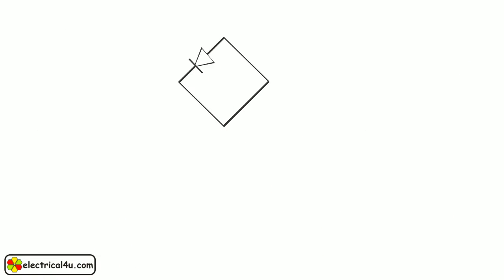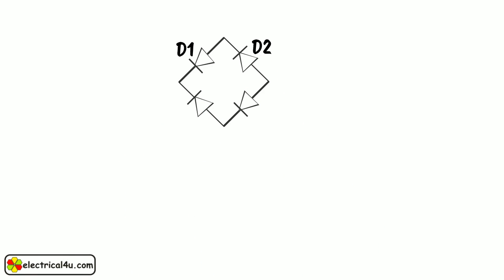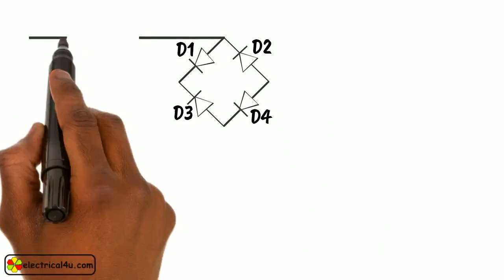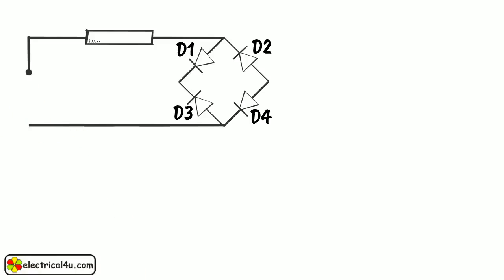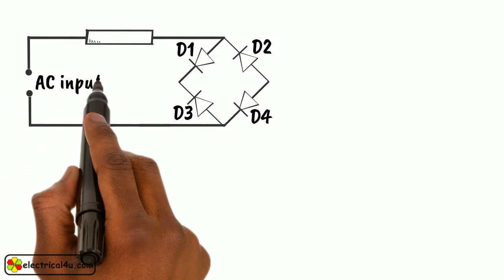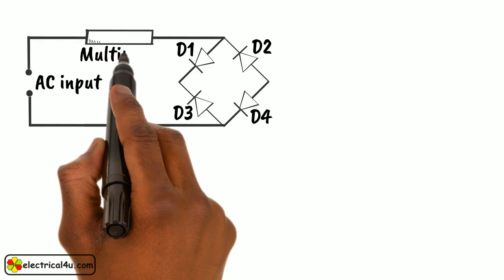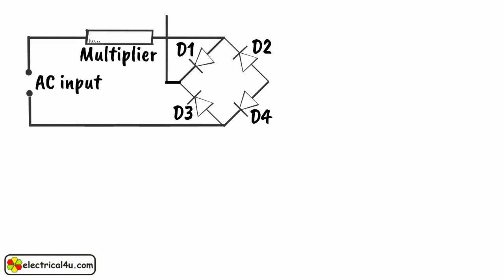A diode bridge rectifier is used. The circuit and waveforms are shown. The bridge rectifier produces a pulsating unidirectional current through the meter movement over the complete cycle of the input voltage.